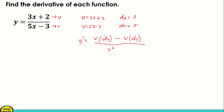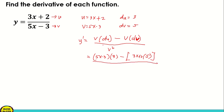Okay, so let's just follow the formula. What is v? That is 5x minus 3. And what is du? That is 3. Minus — since there's a minus sign here, we need to put a bracket so we can change the sign later when we expand. So u is 3x plus 2, times the derivative of v, which is 5. All over v, which is 5x minus 3, squared.